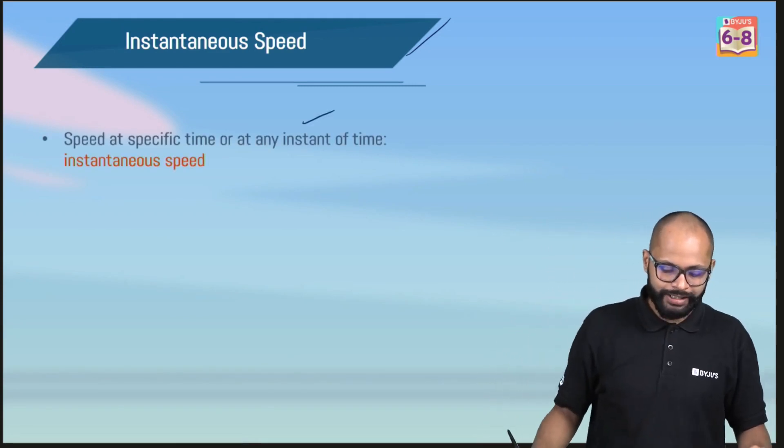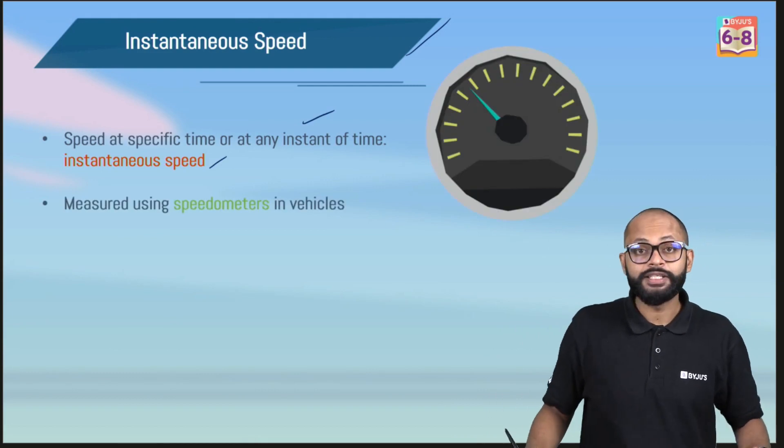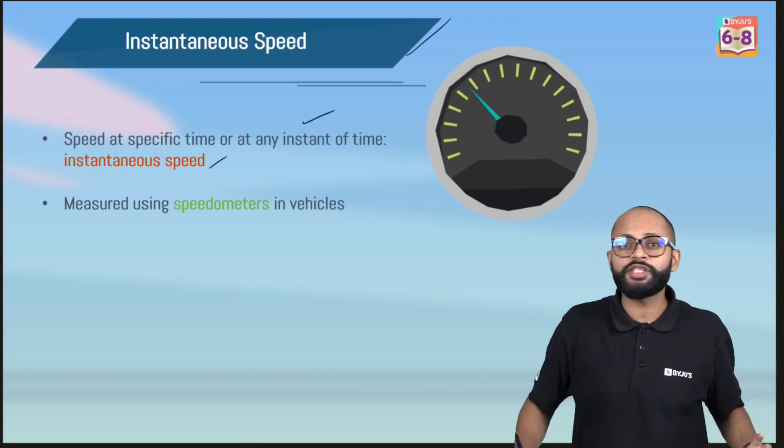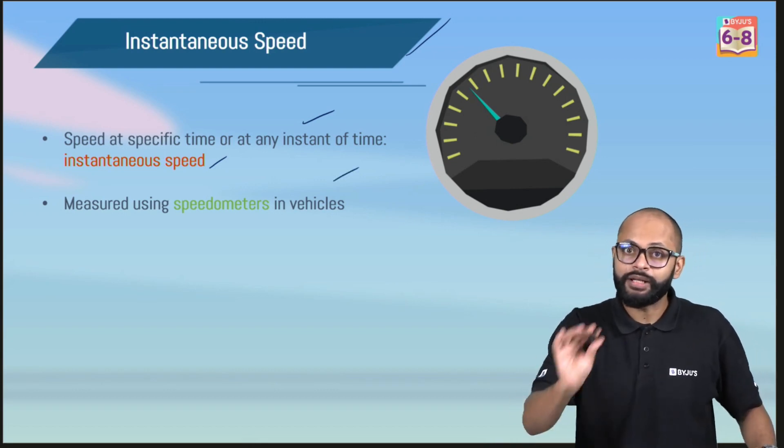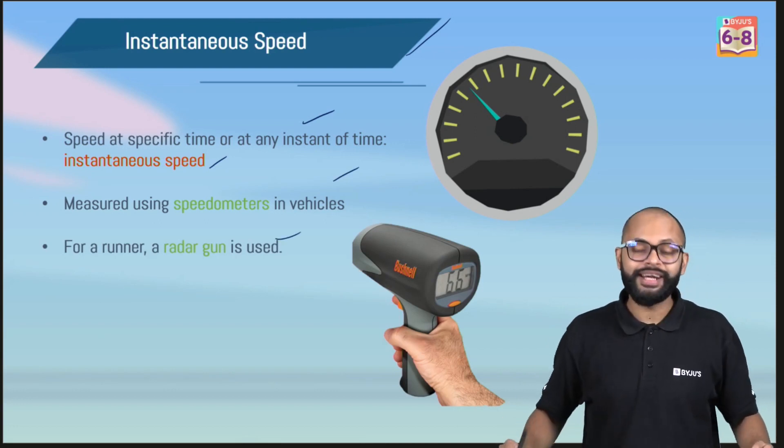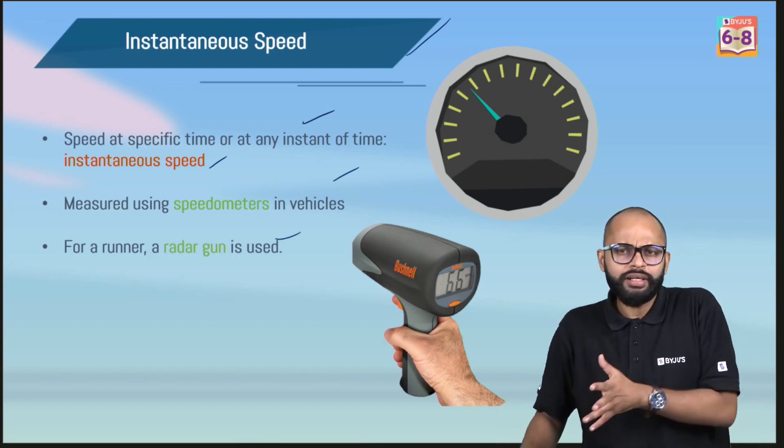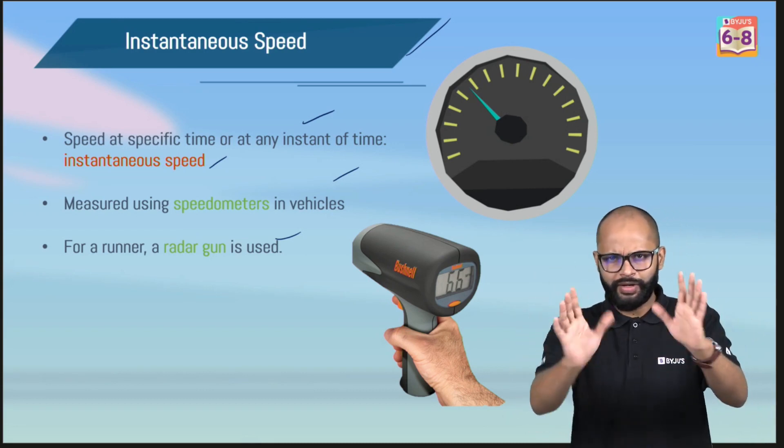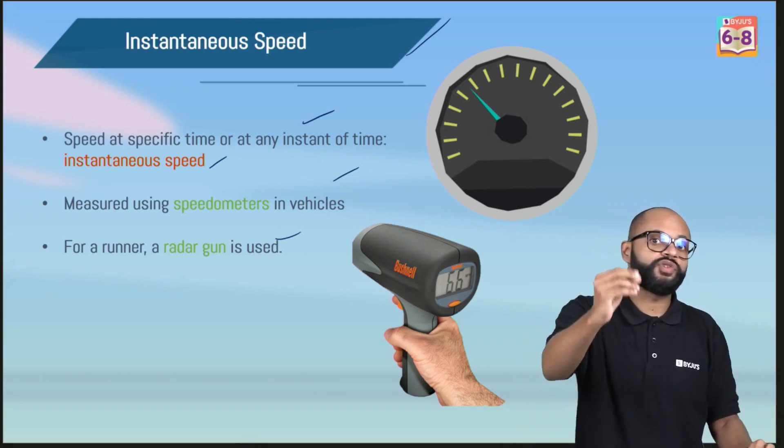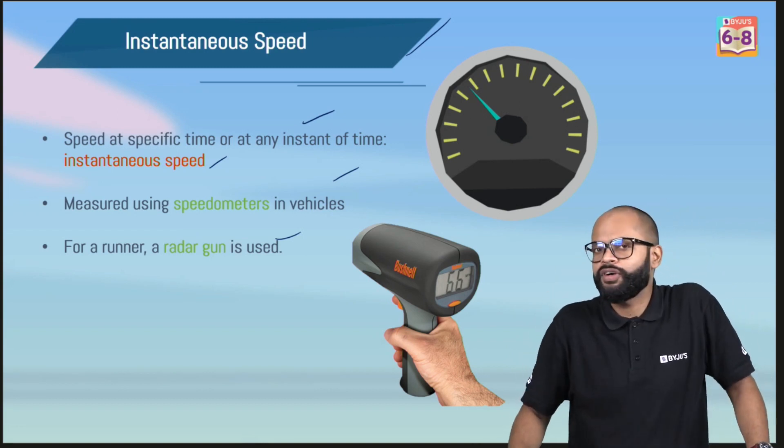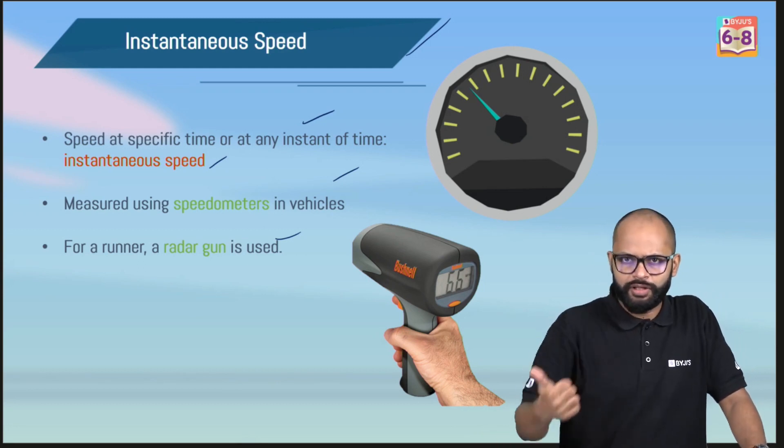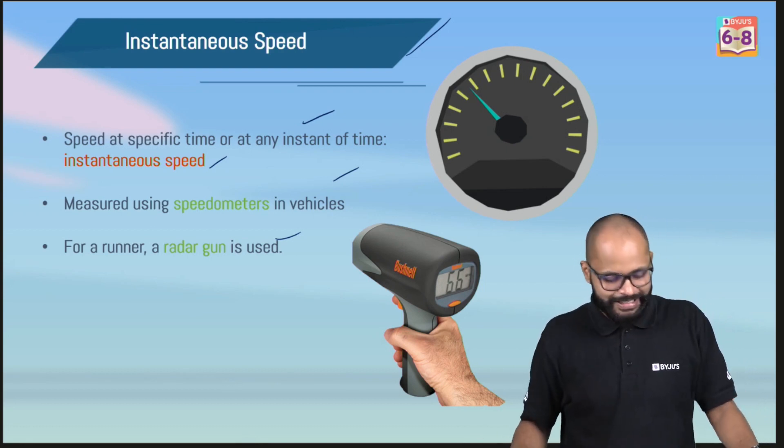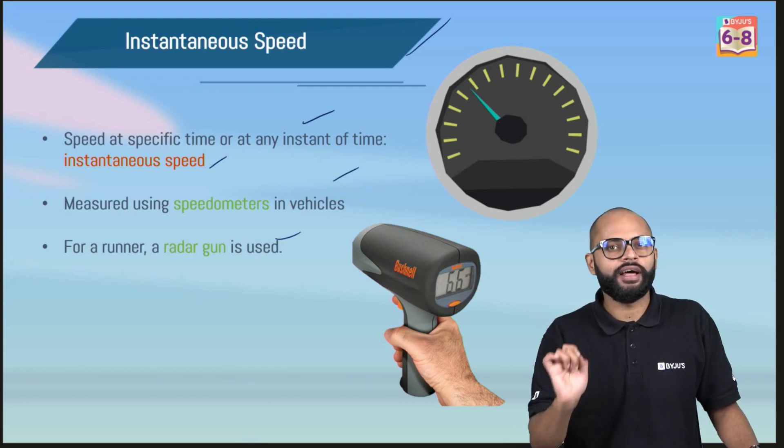Speed at any specific time or at any instant of time is what we call as instantaneous speed. In our cars or bikes or scooties, we have a dial, we call it the speedometer. It tells you the instantaneous speed in vehicles. But for runners, we use a radar gun. Recently we have started using lidar guns also. Radar guns are used to calculate the instantaneous speed of a runner. You might have seen these guns with the traffic police whenever they charge you for over-speeding on highways.